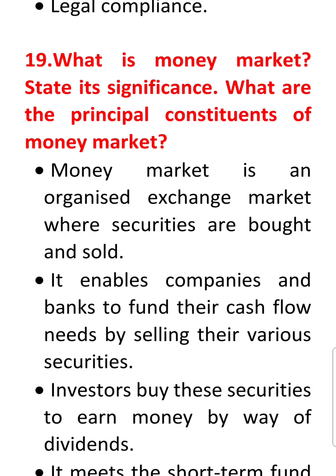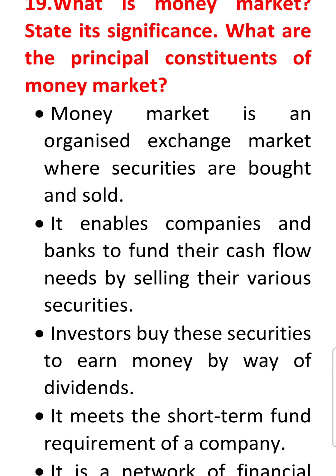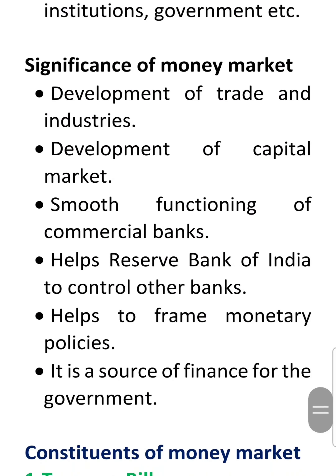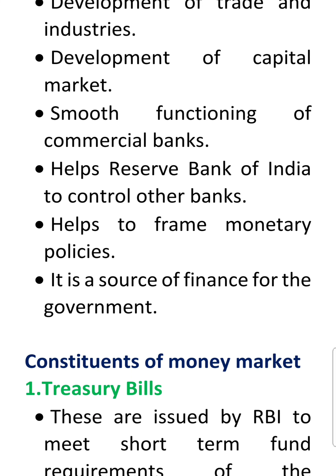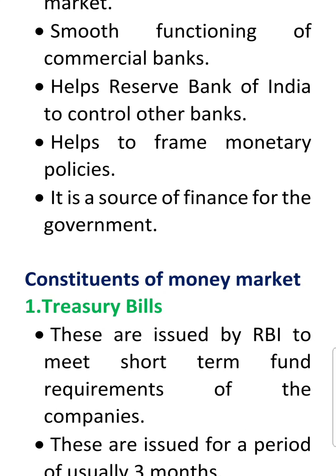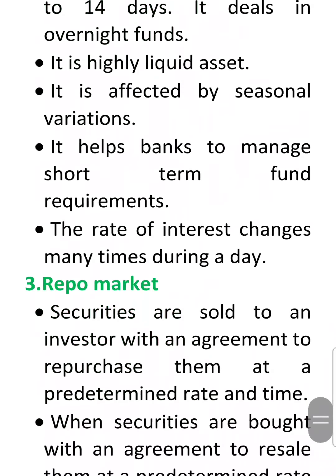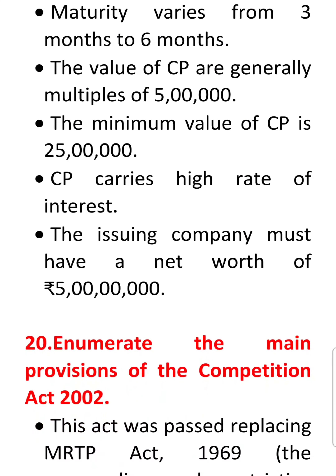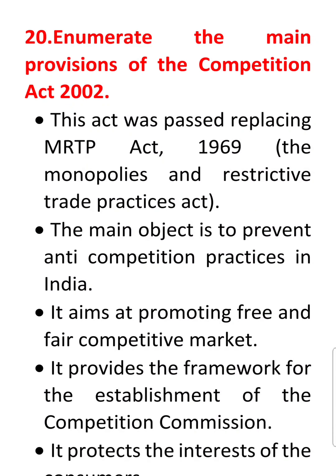The next very important question is on money market and its main constituents. The money market is an organized exchange market where securities are bought and sold. Its significance includes helping in trade and industries, development of capital markets, and smooth functioning of commercial banks. The main constituents are: treasury bills, call money market, repo market, and commercial paper. I have explained all these topics in previous videos — links will be shared in the description.